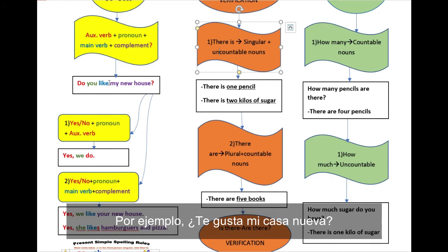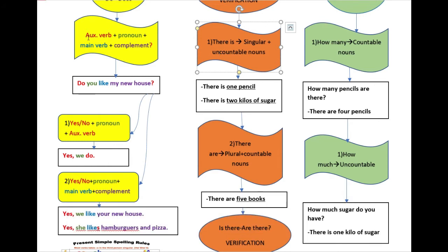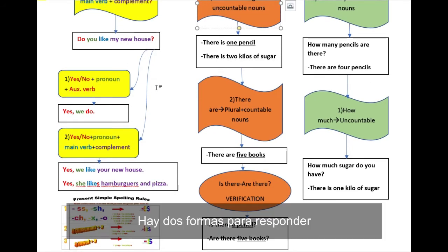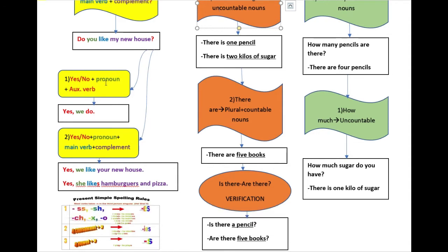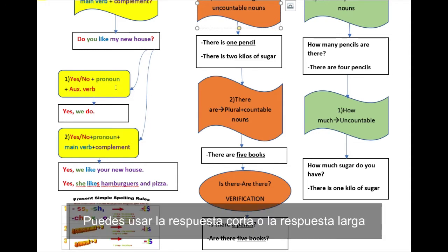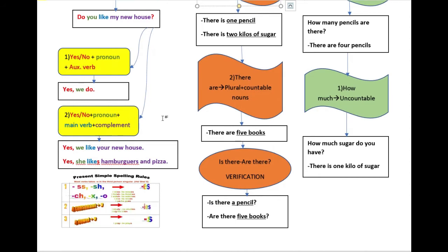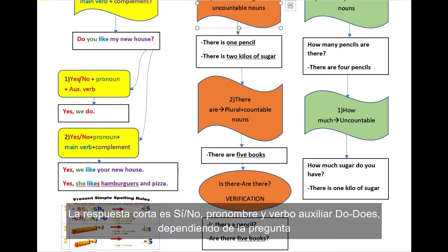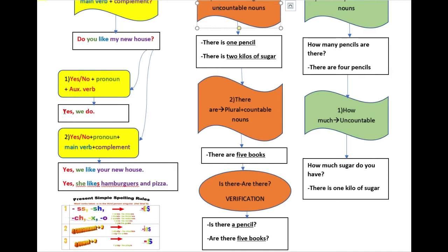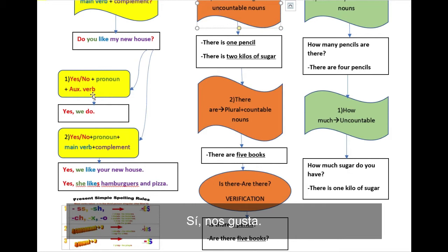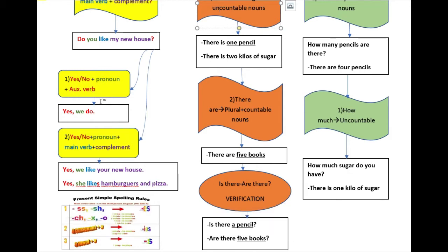For example, do you like my new house? Do, auxiliary verb, you, pronoun, like, main verb, complement. What do you like? There are two types of answers. You have the short answer and the long answer. The short answer is yes, no, pronoun, and the auxiliary verb, depending on the question. Yes, we do.